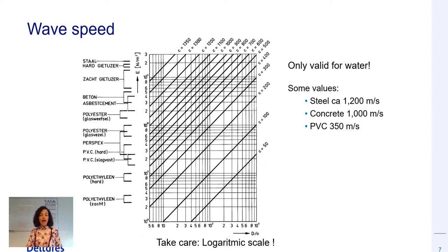In case we don't know the values of these parameters, we can use the following graph for determining the wave speed in water pipelines in relation to pipe material and wall thickness.